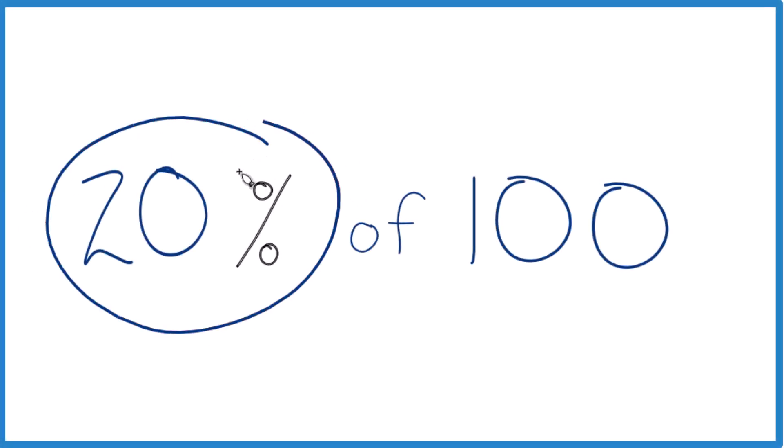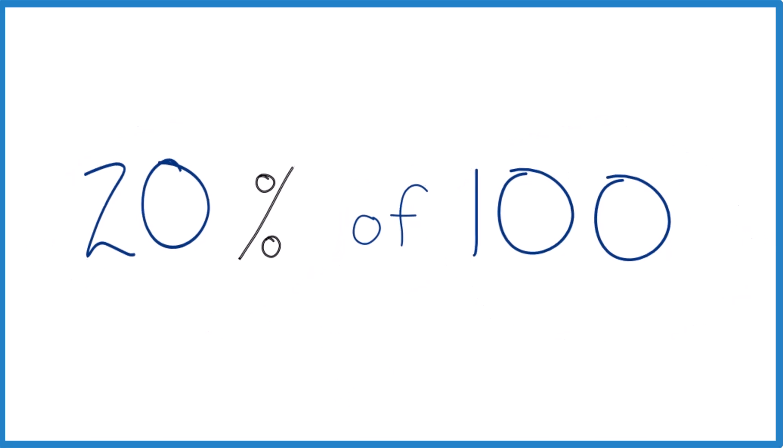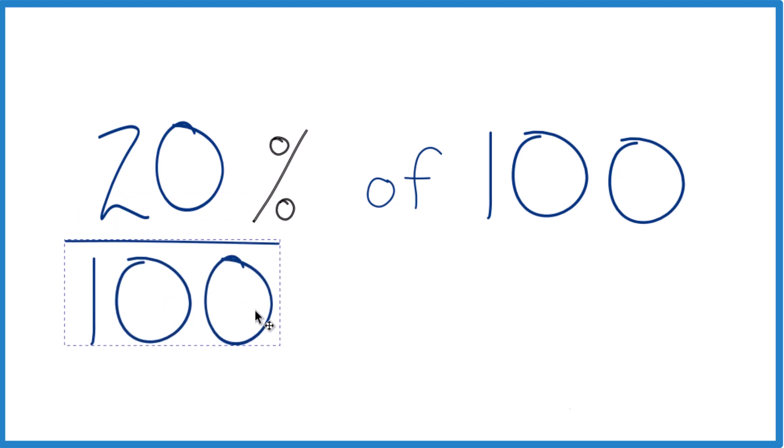Here's how you figure out 20% of 100. So first off, you can think about the percent as per 100. So 20% is 20 per 100. So 20% of 100 is just 20. That's one way to think about it.